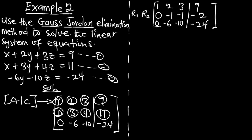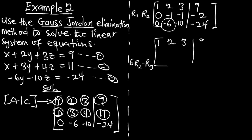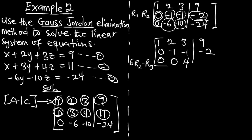Now I want to turn this negative 6 to 0. I am going to apply R3 = 6×R2 − R3 on row 3. Row 1 and row 2 stay the same. On row 3: 6×0 − 0 = 0; 6×(−1) − (−6) = 0; 6×(−1) − (−10) = +4; and 6×(−2) − (−24) = +12.